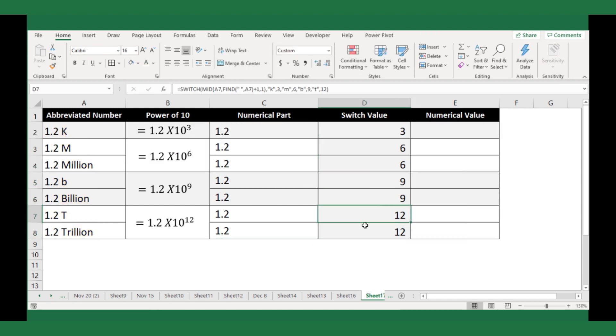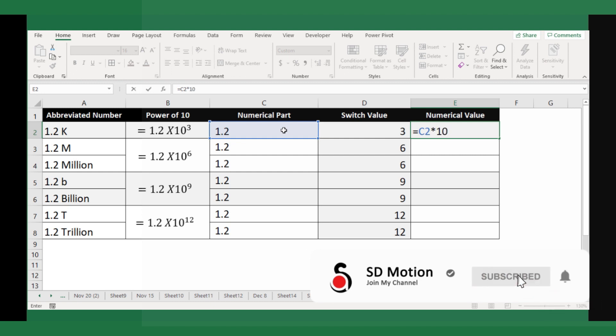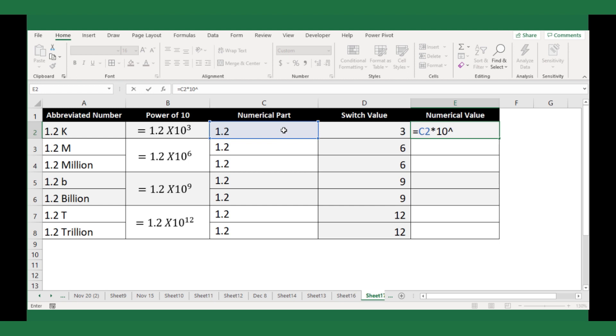So, we are ready to complete our required conversion formula. Now we can multiply this conversion with the extracted numeric values. Hence, equal extracted numeric value multiply with power 10 of the switched value. Use the exponential character to return the power of 10.